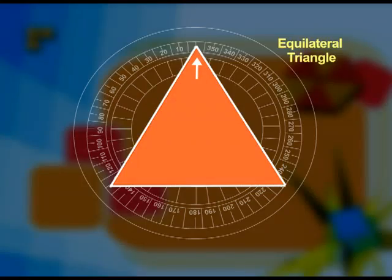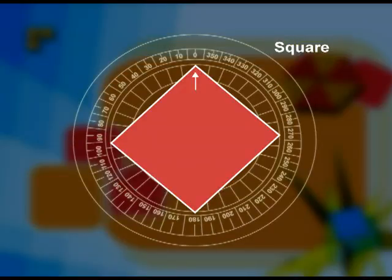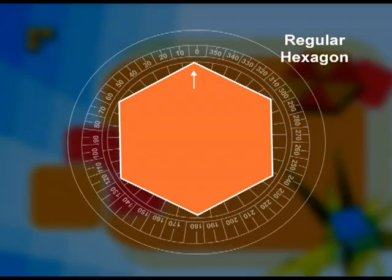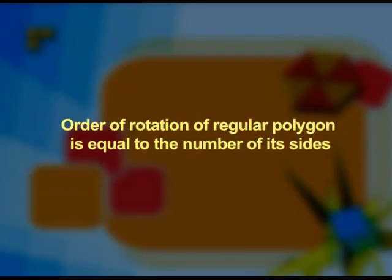Friends, you must have observed that for an equilateral triangle the order of rotation is 3, for a square it is 4, for a regular pentagon it is 5, and for a regular hexagon it is 6. The order of rotation of a regular polygon is equal to its number of sides. Therefore, the order of rotation of a regular polygon having n sides is equal to n.